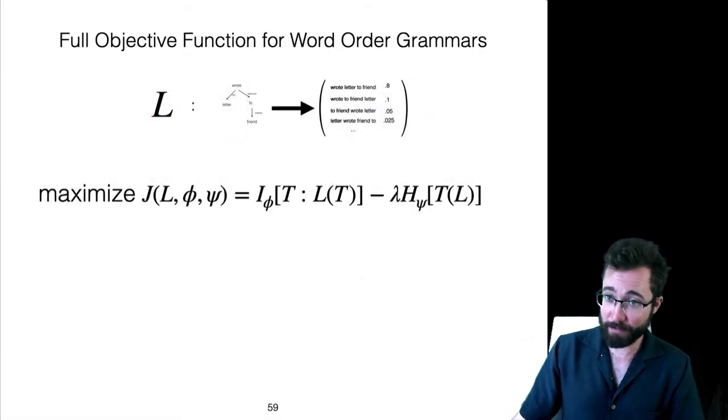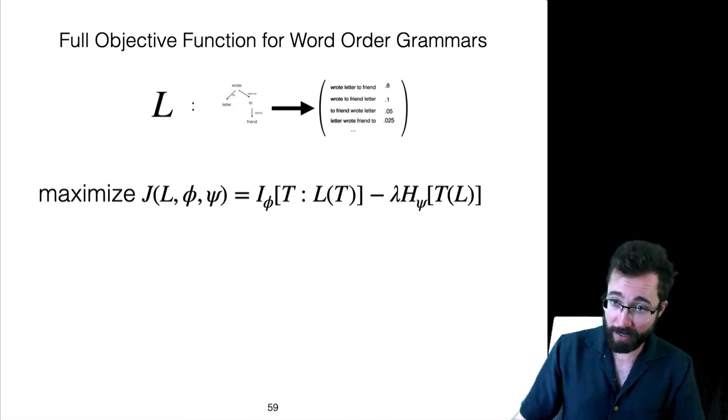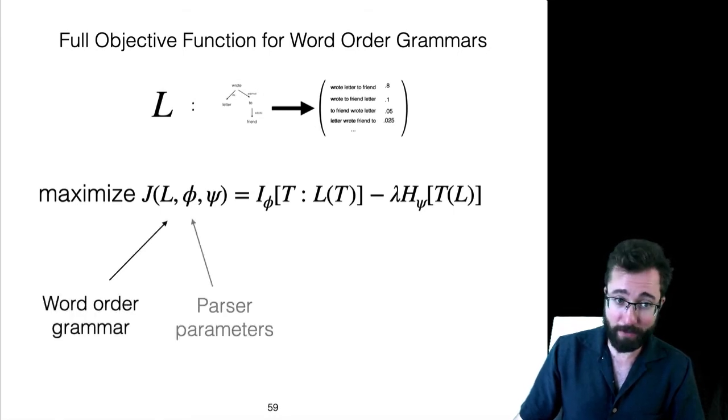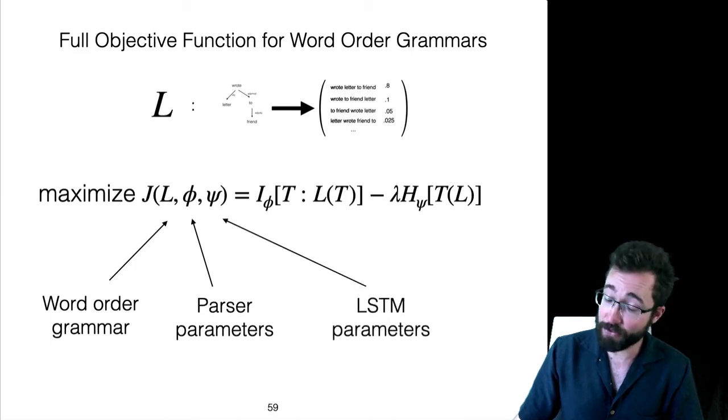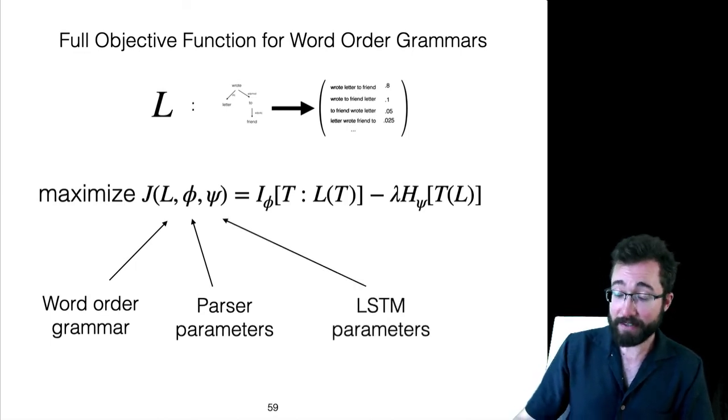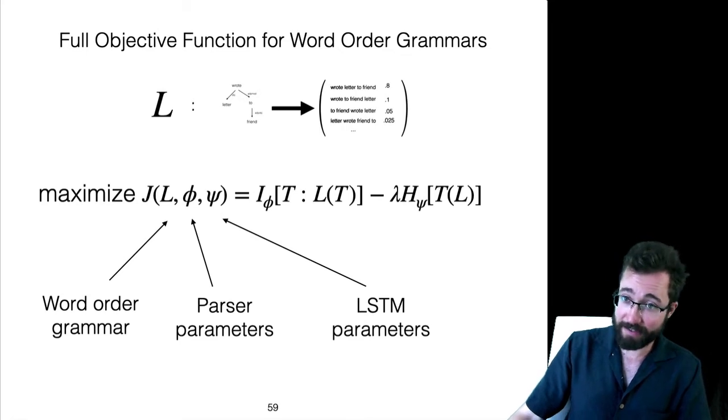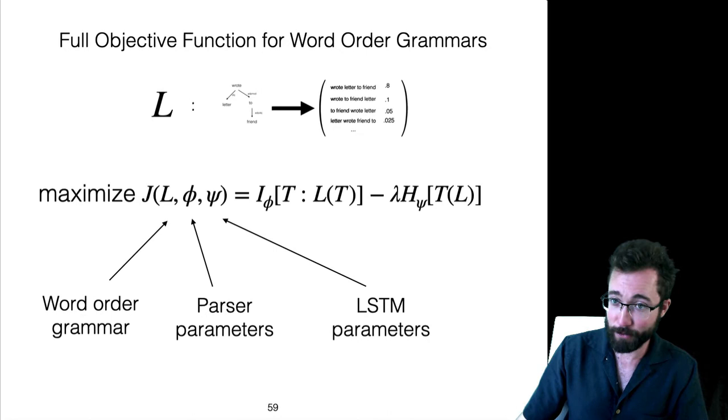The actual maximization problem that we're going to solve is going to look like this. You want to find a word order grammar and a parser and a language model to maximize this quantity. L is the word order grammar, phi is the parameters of the parser, psi is the LSTM parameters. The whole thing is differentiable, so it's actually possible to solve this and find the optimal languages with the maximally efficient parsers and language models.